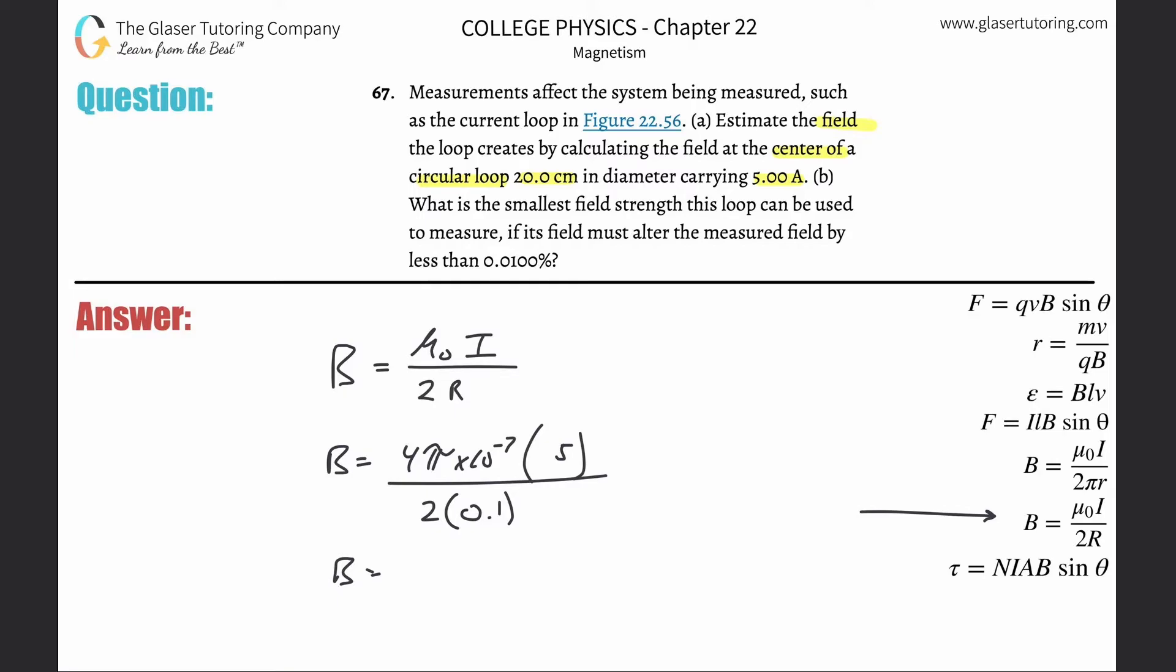Plug and chug. It's going to be 4π times 10 to the minus 7 multiplied by 5 divided by 2 times 0.1. This works out to be 3.14 times 10 to the minus 5 Tesla.